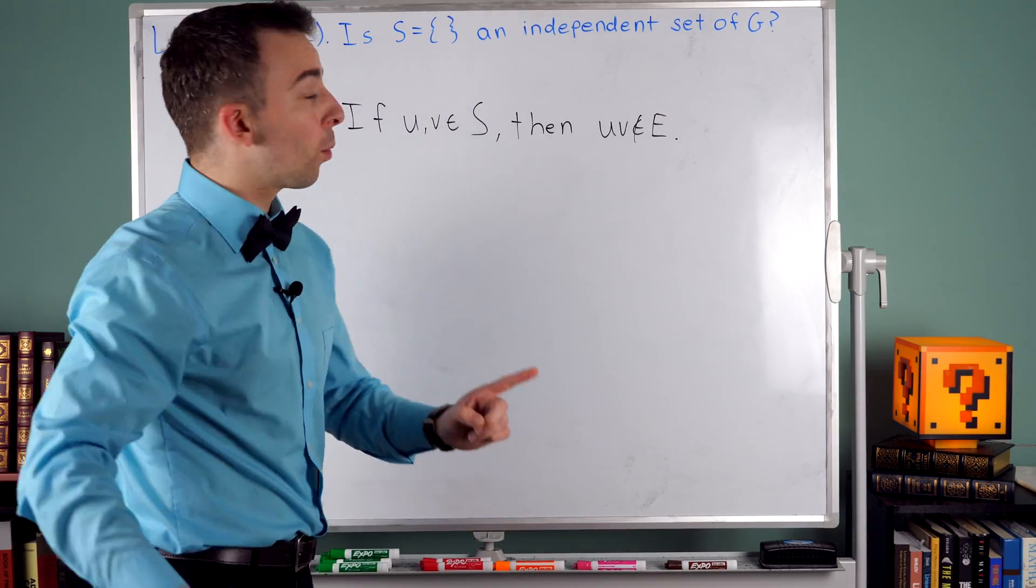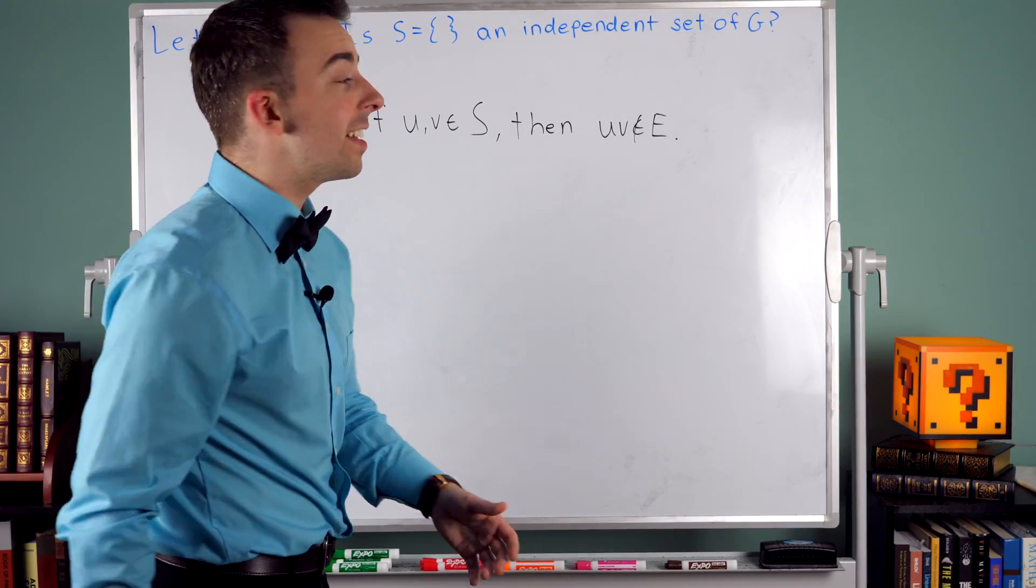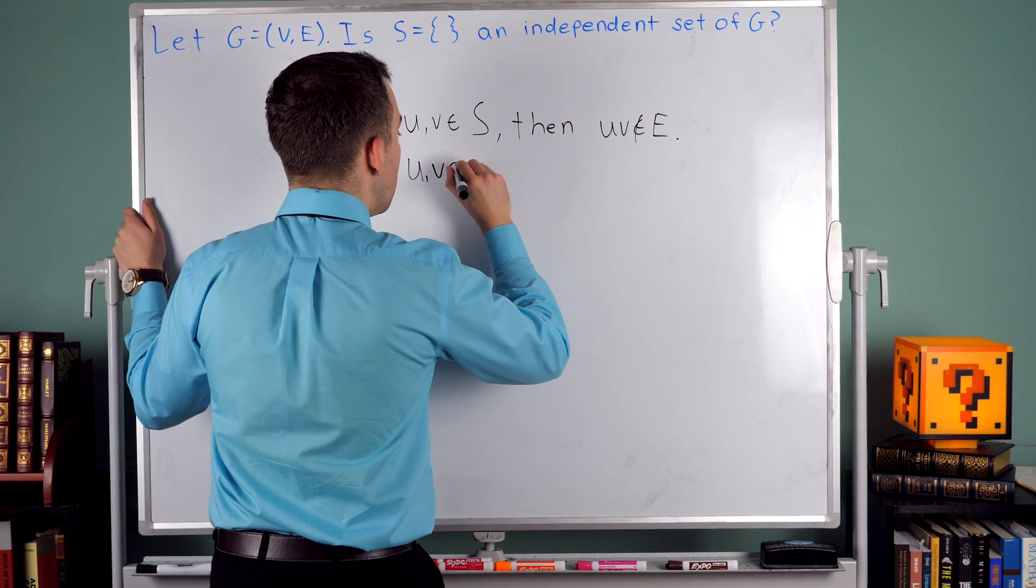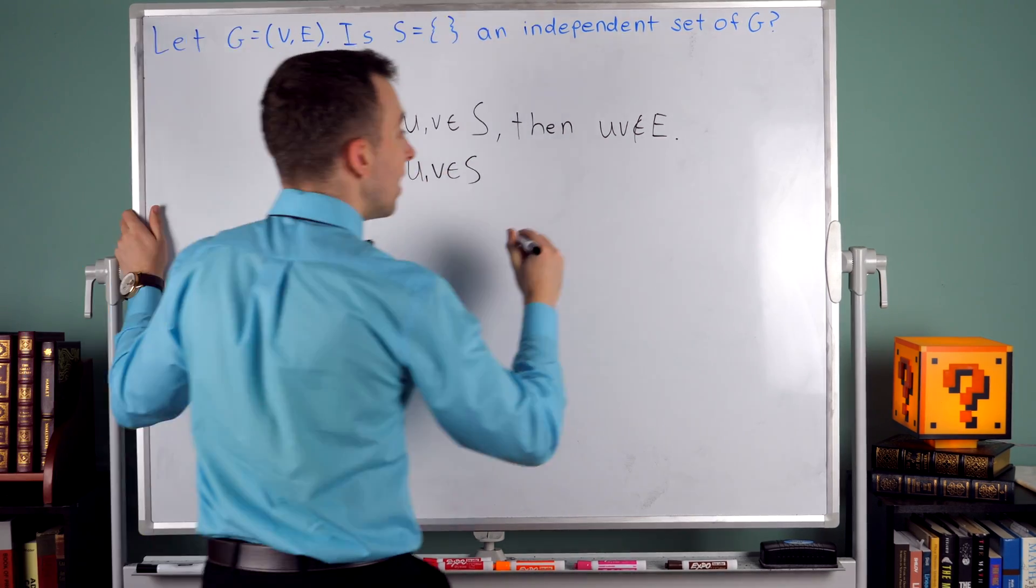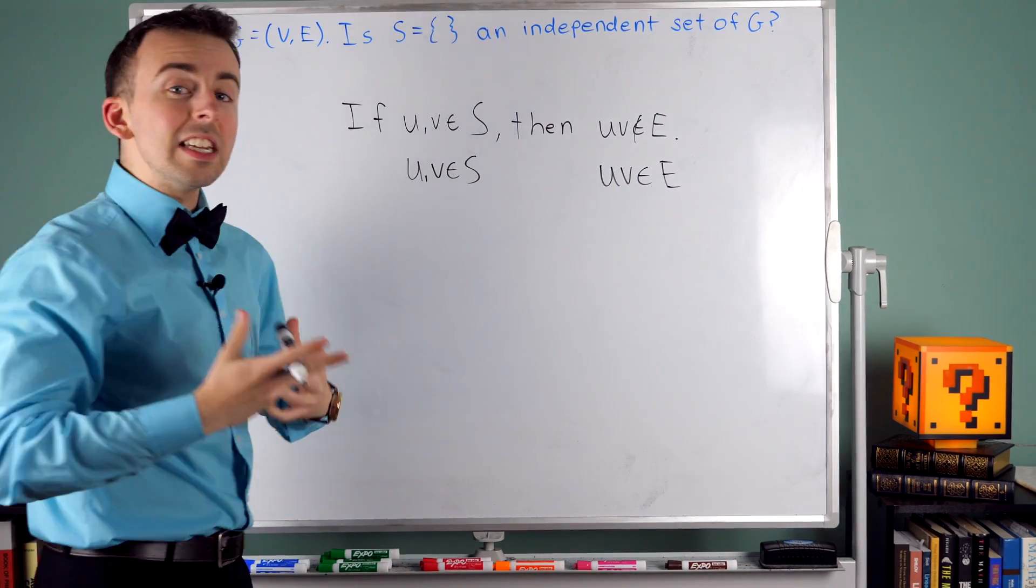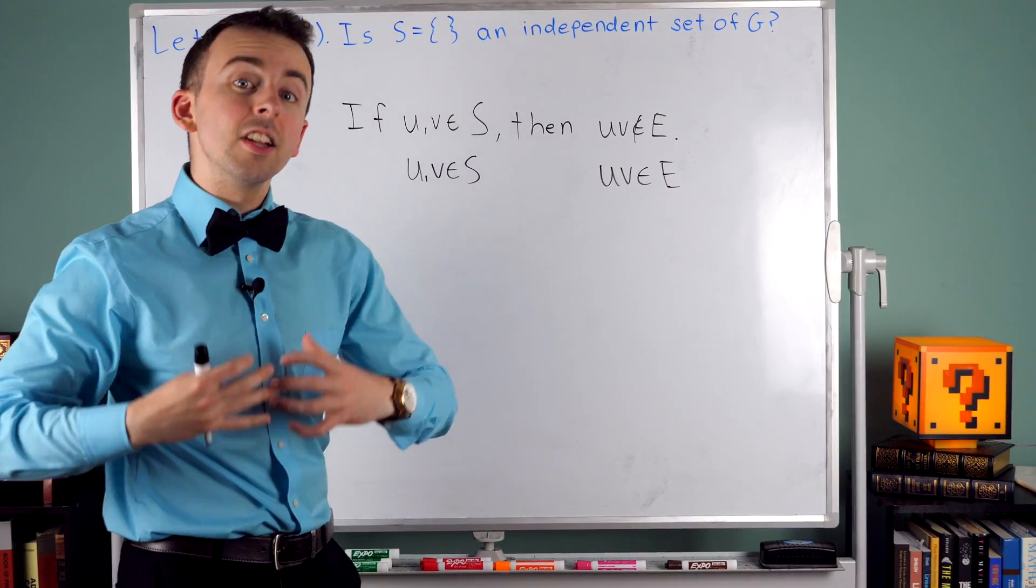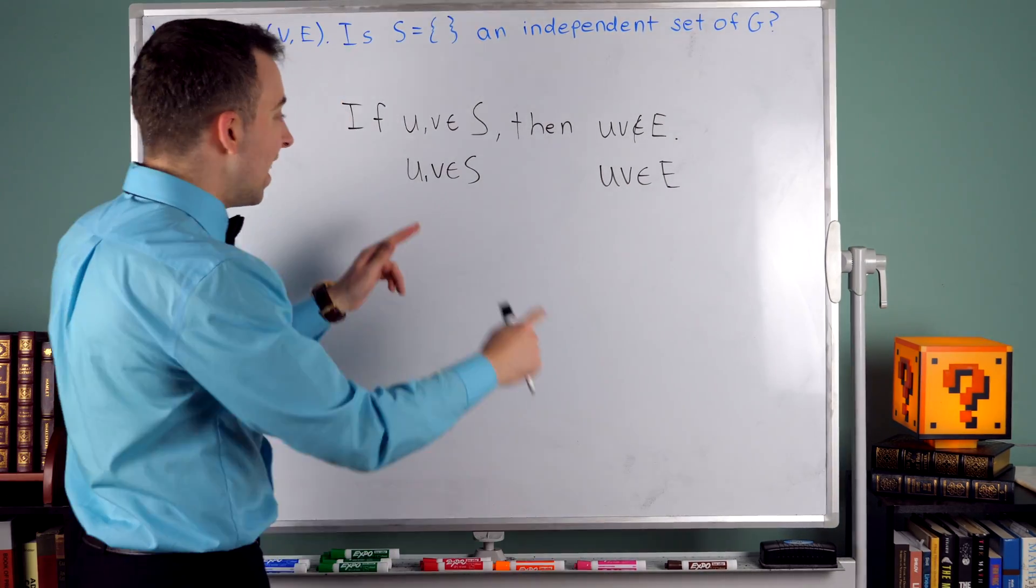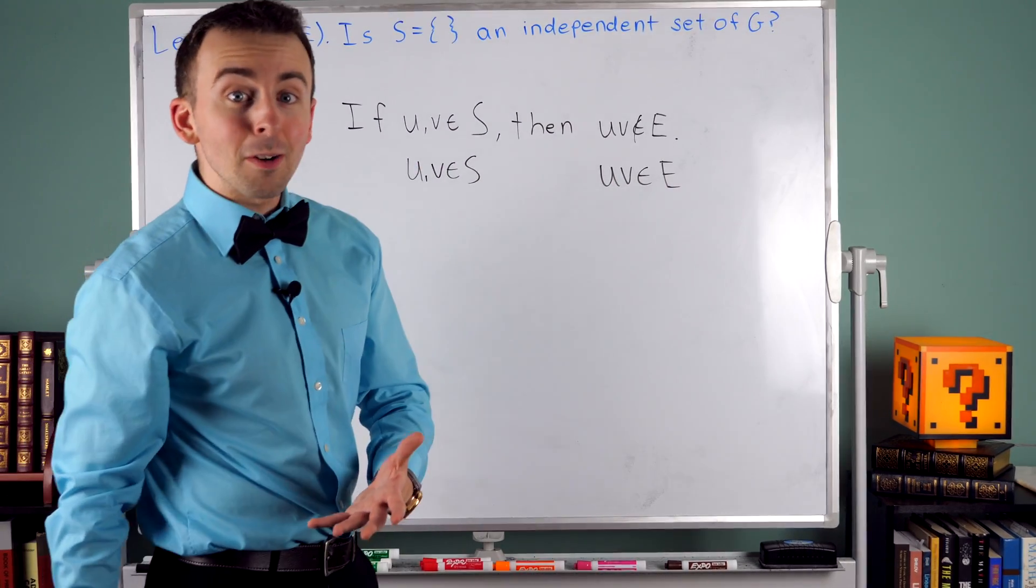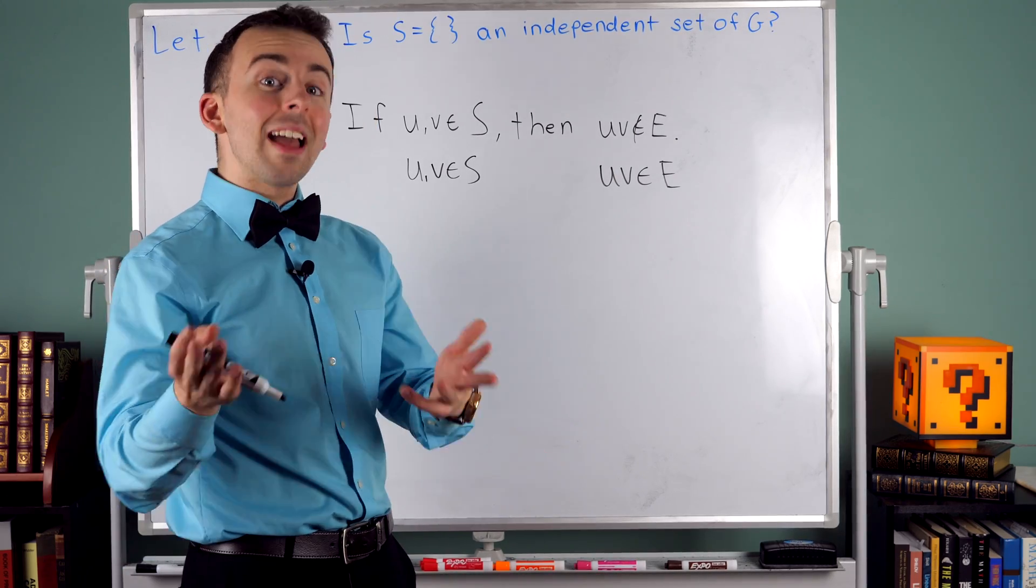So let's go through that a little more slowly. What would a set have to do to not be an independent set? Well, we would need to have two vertices, U and V, from the set so that U and V are joined by an edge, so that U and V are adjacent. That's what we would need for a set to not be an independent set. It would need a pair of adjacent vertices. Does the empty set have a pair of adjacent vertices? No, of course not. It doesn't have any vertices.